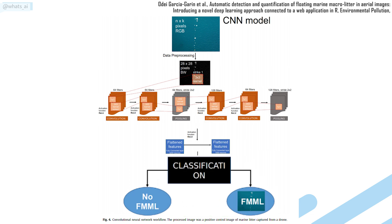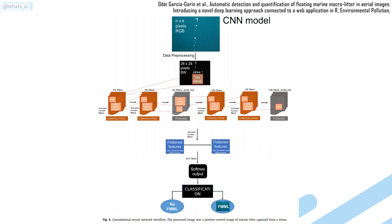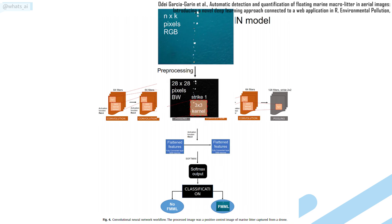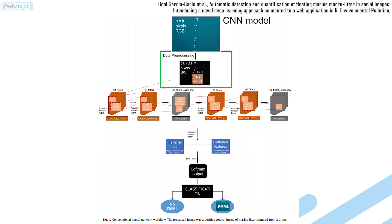Such as FMML in this case. Note that this exact same architecture could have been used on any other computer vision application with a task to classify whether or not something is in the image, such as spotting a defect on a manufacturer part, or telling if there is a dog or not. What they did differently, making it powerful for FMML detection, is that they had the idea to split the image into 25 smaller cells that each output a classification result — FMML or not — yielding much better overall accuracy.